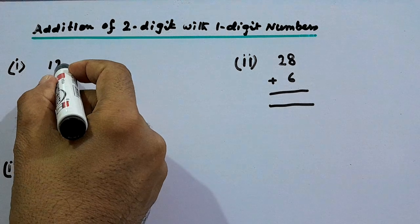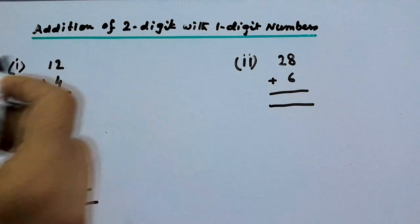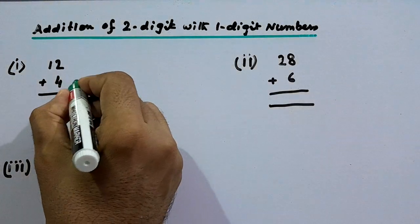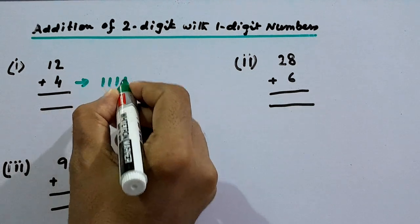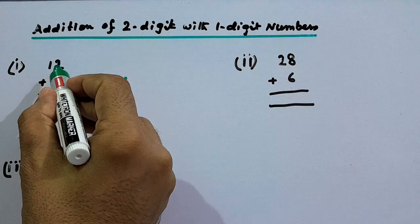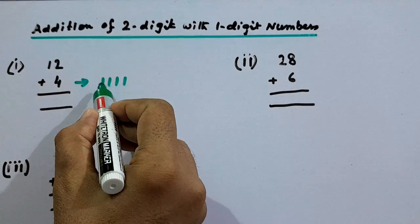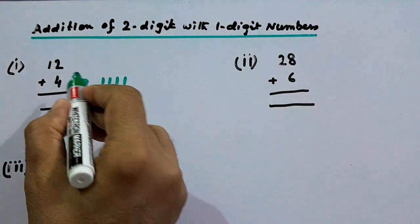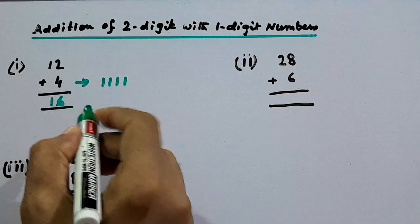First example is 12 plus 4. 12 is the two-digit number and 4 is the one-digit number. Against the single-digit number, we will draw 4 lines: 1, 2, 3, 4. Now we'll add 12 with these 4 lines. After 12, this will be 13, 14, 15, and 16. So 12 plus 4 is 16. This is the answer.